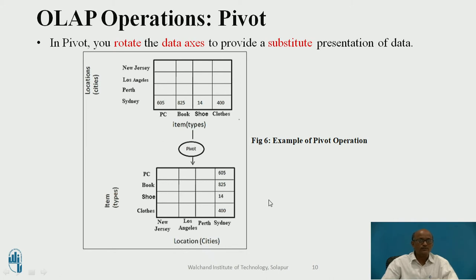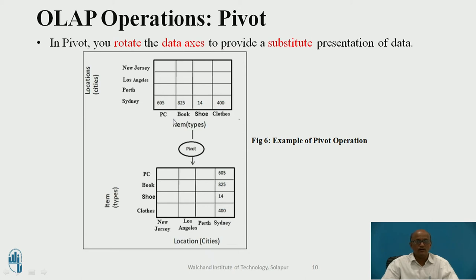Now the last of all operations: pivot. In pivot, we can rotate the data axis to provide a substitute presentation of data. The same data can be shown in a different manner. In the first figure, the item on the left-hand side was the name of the cities, and on the x-axis they were products. Now the same thing — if you rotate this — the product will be displayed on the y-axis and the name of the city will be displayed on the x-axis.